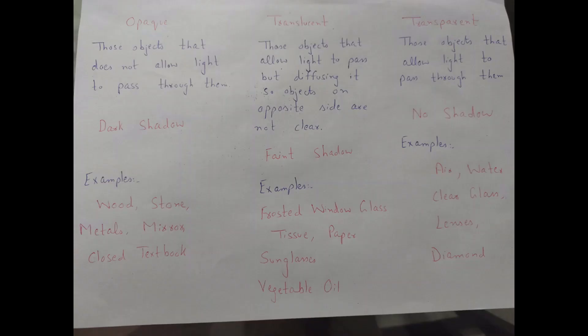Transparent objects are those that allow light to pass through completely. Examples include air, water, and glass. Because they allow light to pass through, they do not block the path of light, and due to this there will be no shadow formation. So basically, opaque objects make the darkest shadow.